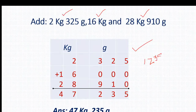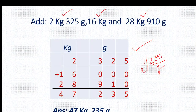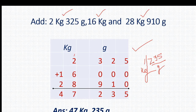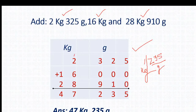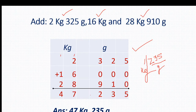We are getting 1235. The first three digits — 2, 3, 5 — are for gram, and 1 is for kg. So 235 gram is written here and 1 kg will be added to the kg column. 1 plus 2 is 3, 3 plus 6 is 9, 9 plus 8 is 17 — 7 written here and 1 will be added to the next column. So 1 plus 1 is 2, 2 plus 2 is 4. Our answer is 47 kg 235 gram.